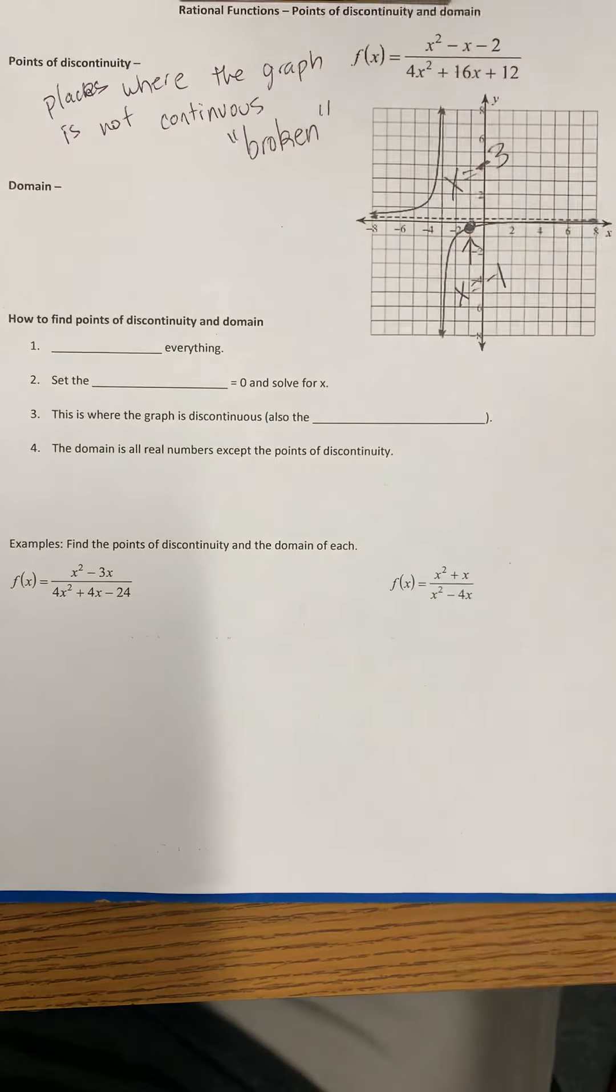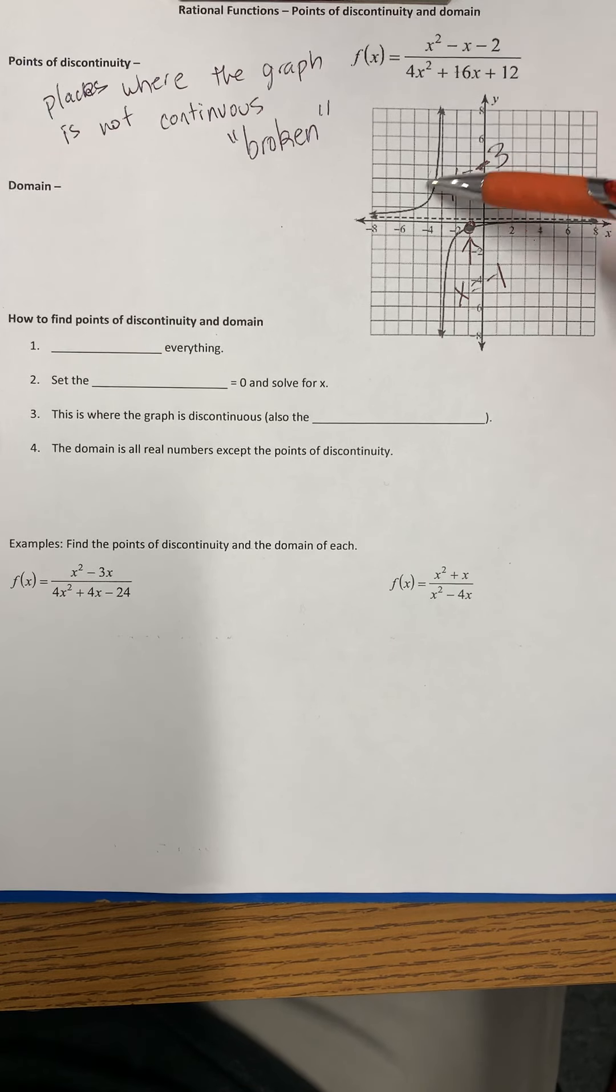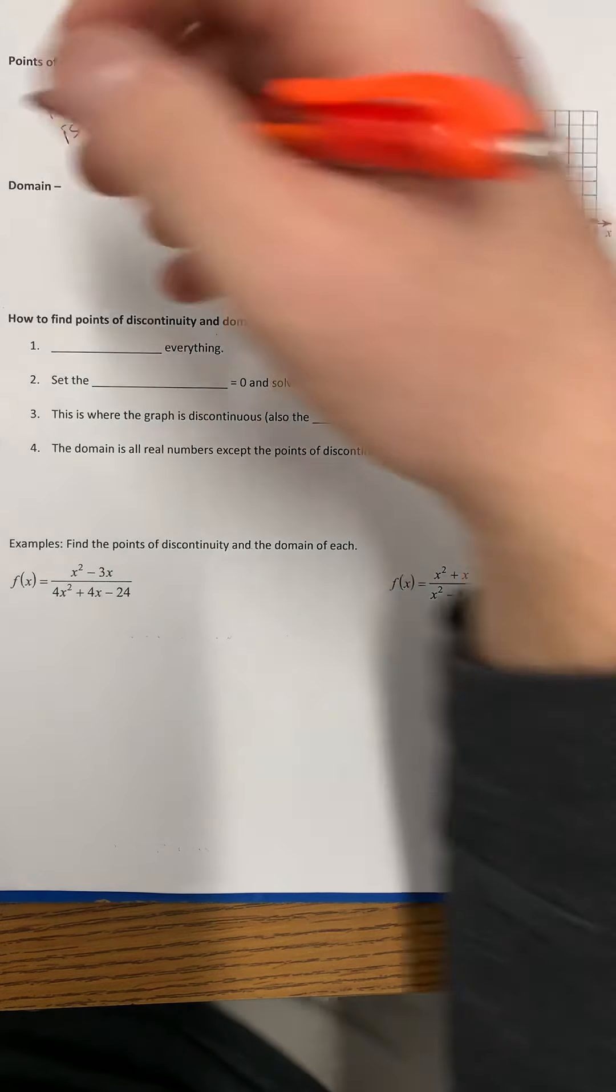The domain in this case, if we were to refer to the graph, the domain would be all of these x values included in the graph. All of the x values are included in the graph except this vertical asymptote and this hole. We'll talk about vertical asymptotes and holes more in the next video.